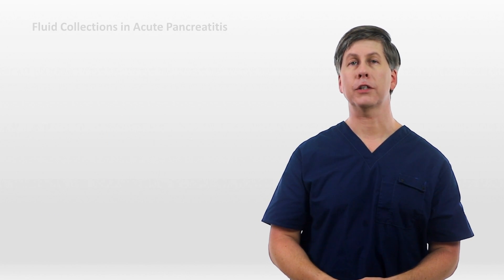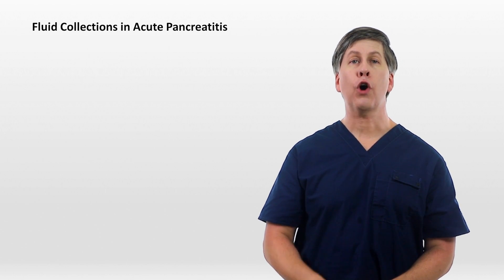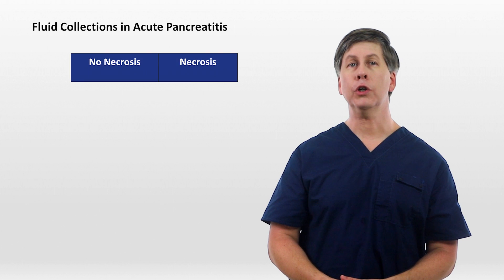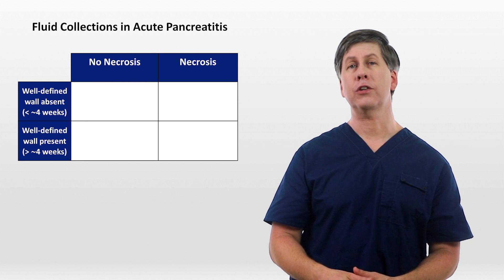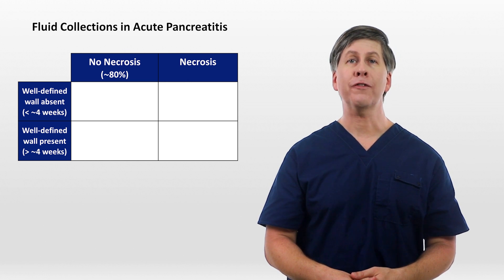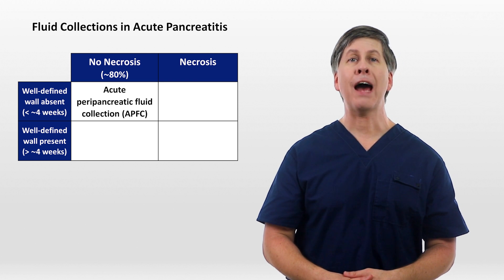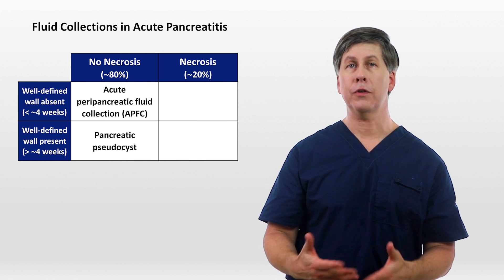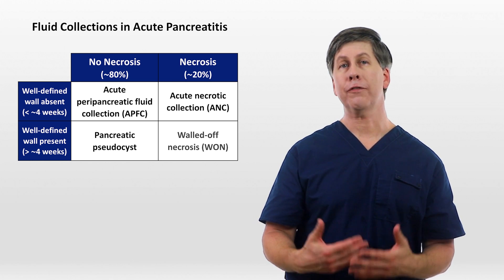When it comes to the complications of pancreatitis, fluid collections are the most common and most complex to deal with. There are four basic types of collections depending on whether they are associated with pancreatic necrosis and whether they have a well-defined wall, which typically takes around four weeks to develop. About 80% of collections are not associated with necrosis. Before they have a well-defined wall, they are referred to as acute peripancreatic fluid collections, and after they have a wall, they become pancreatic pseudocysts. In the 20% of collections associated with necrosis, they are initially referred to as an acute necrotic collection, and later become walled-off necrosis.